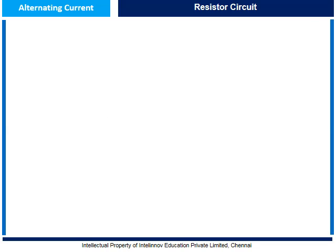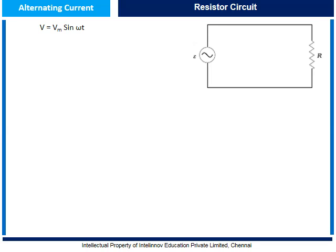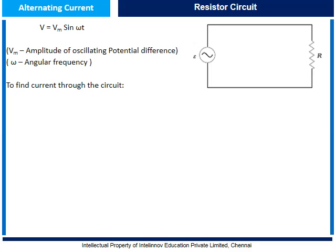Let us start with the resistor circuit. Look at the circuit given here. It has a sinusoidal AC voltage input and a resistor connected. The sinusoidal voltage V is given by Vm sine ωt, where Vm is the amplitude of the oscillating potential difference and ω is the angular frequency. To find the current through this circuit, let us use Kirchhoff's law. As per Kirchhoff's law, the sum of all potentials in a circuit is equal to zero, giving us Vm sine ωt equal to IR, where IR is the voltage across the resistor R.